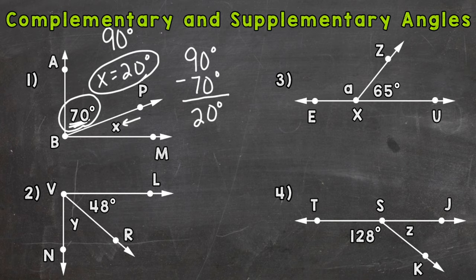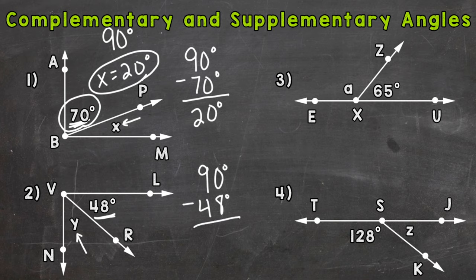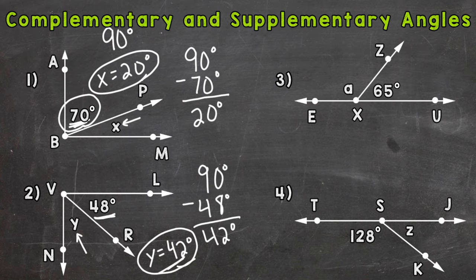Number two — these are complementary angles as well. We have a known: we're given 48 degrees, so we need to find what Y equals. We can take our 90 degrees that we want to get to, subtract what we're given, and that difference will be what Y equals. So 90 minus 48 degrees gives us 42 degrees, so Y equals 42 degrees.